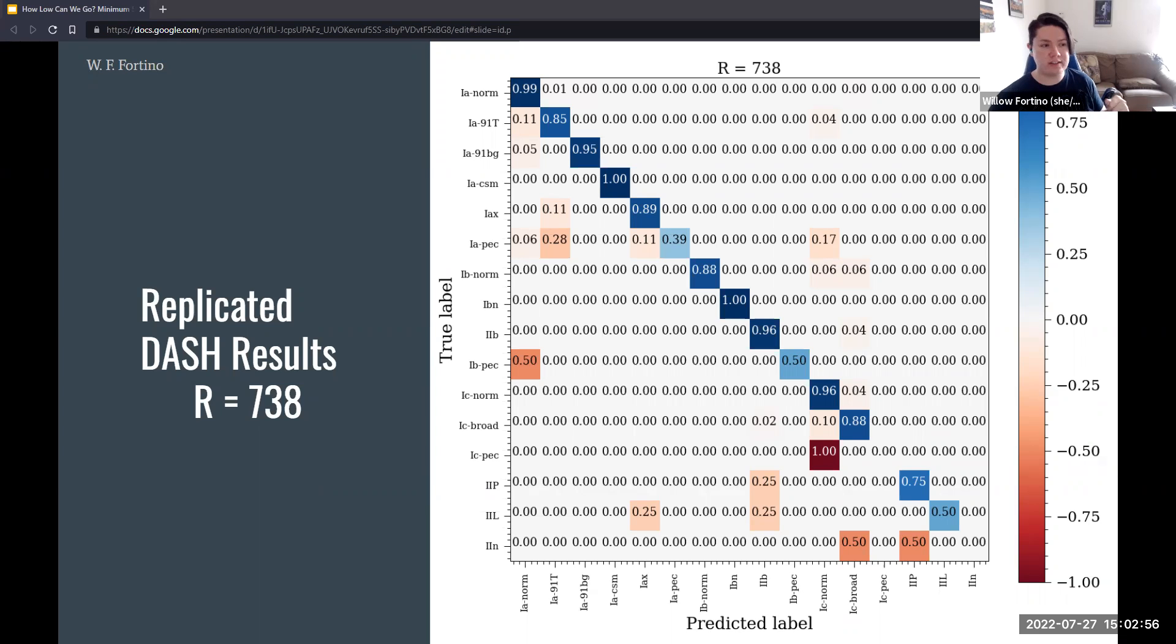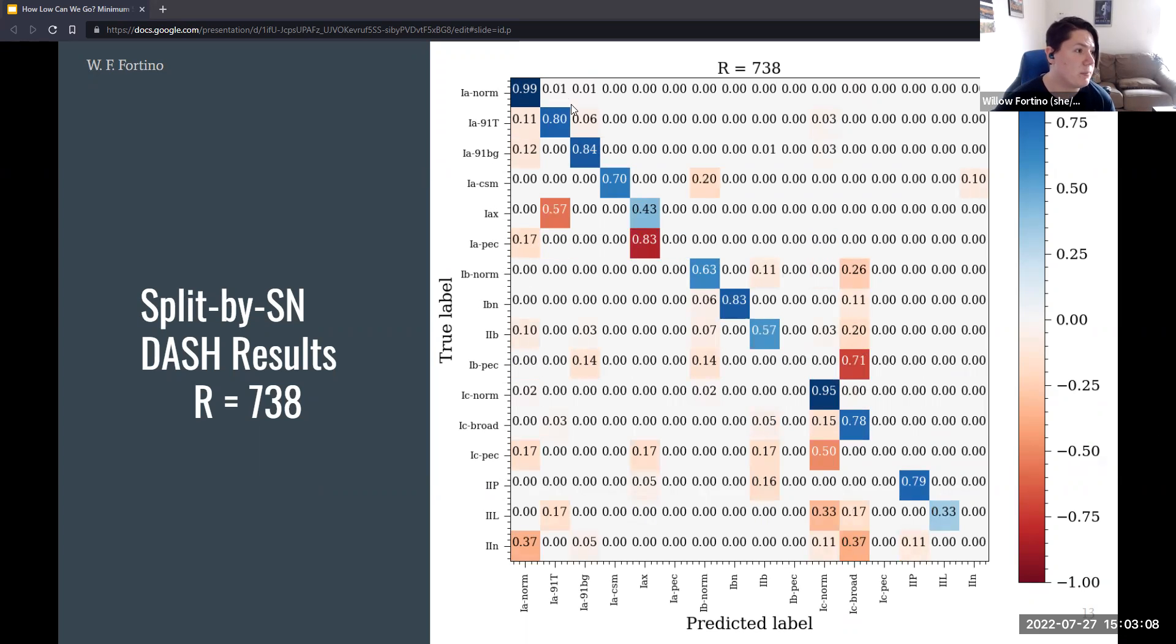So now let's look at a confusion matrix at high resolution from DASH when we split the data on a per supernova basis. We would expect the accuracies to degrade somewhat, but let's take a look. Again, you can see we have 99% classification accuracy in the 1A normals. Generally, we still have fairly good classification power for many of the supernova types, but not good in some of the other ones. This confusion matrix is really the benchmark for our analysis. It's the best we can hope to do with high resolution.